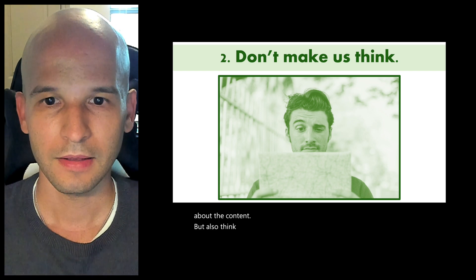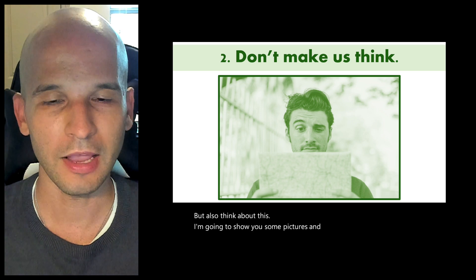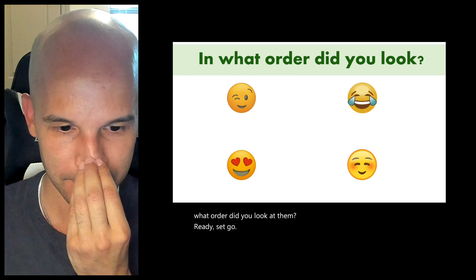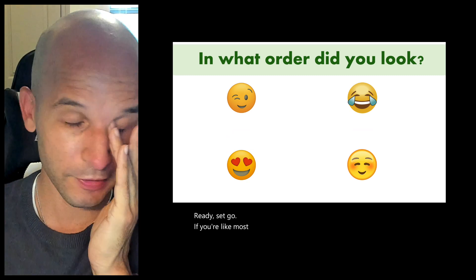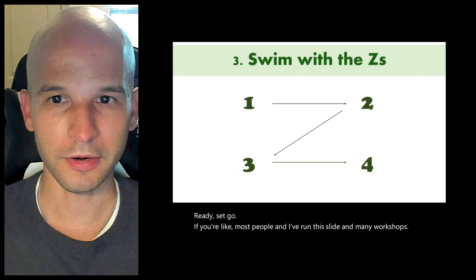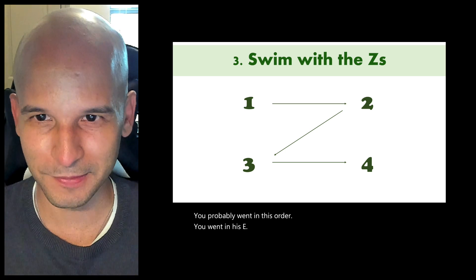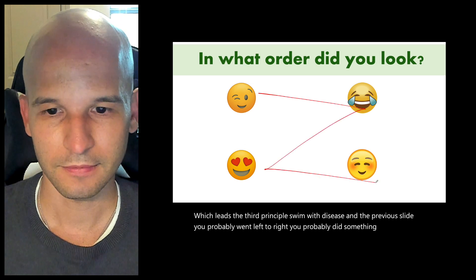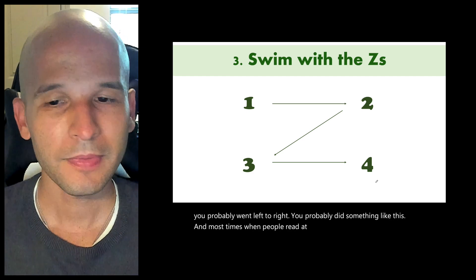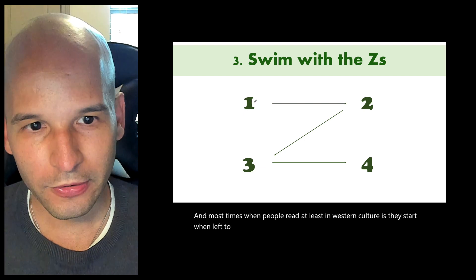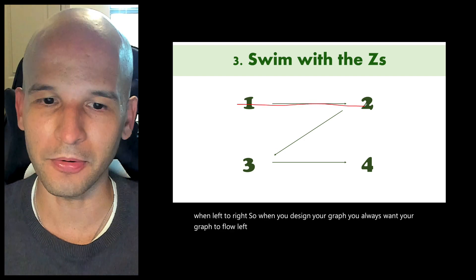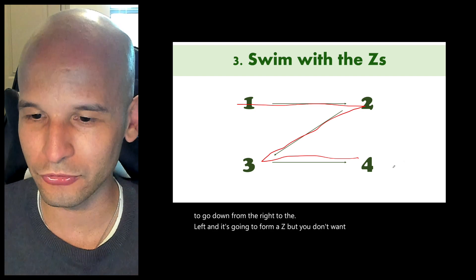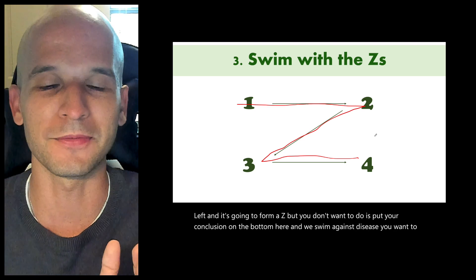I'm going to show you some pictures, and I want you to think about what order you looked at them. If you're like most people — and I've run this slide in many workshops — you probably went in a Z pattern, which leads to the third principle: swim with the Zs. You probably went left to right. Most times when people read, at least in Western culture, they start from left to right. So when you design your graph, you always want it to flow left to right if possible. And if you have to go down, it goes from right to left, forming a Z.